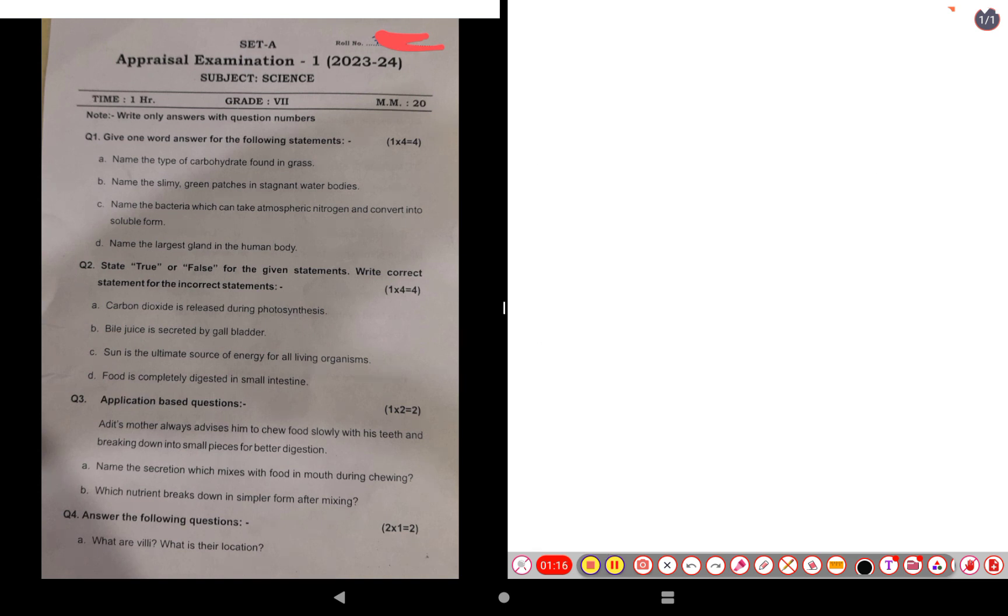Now let's move on to question two, true or false. Carbon dioxide is released during photosynthesis. The answer for this one is false. Carbon dioxide is not released during photosynthesis, oxygen is released during photosynthesis.